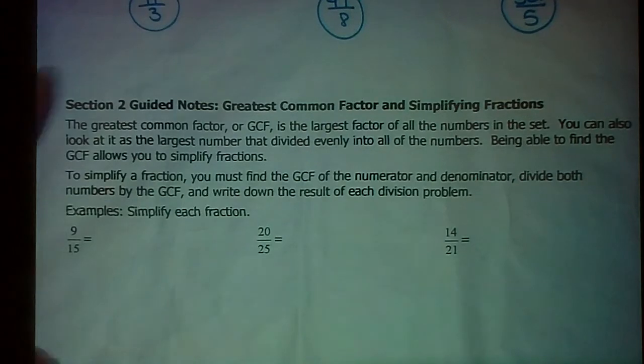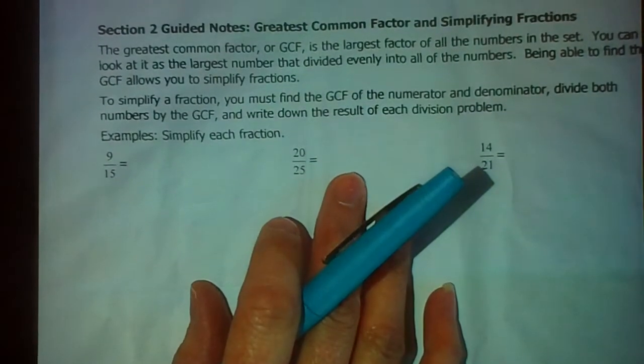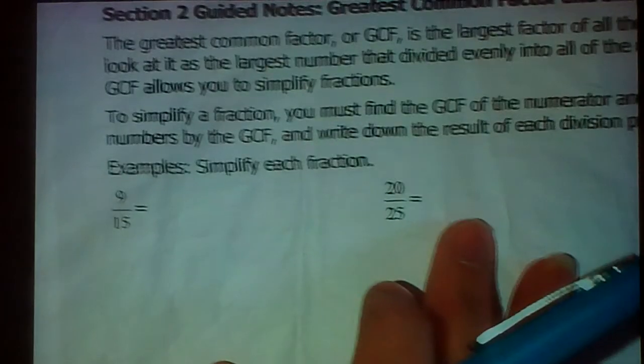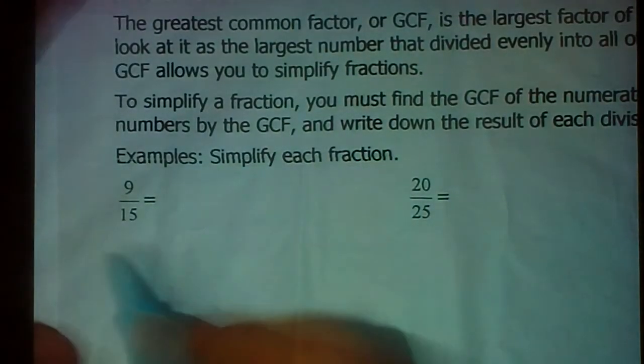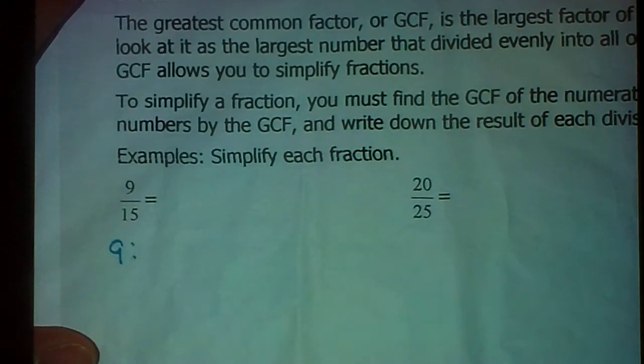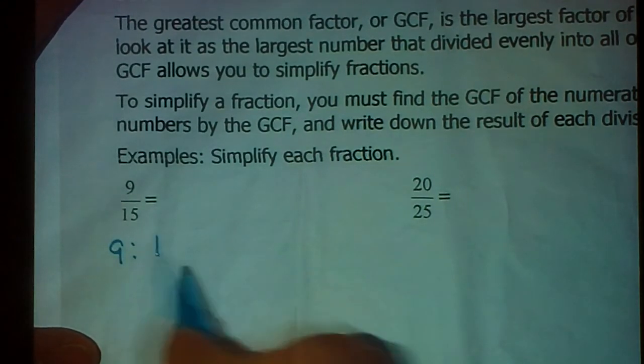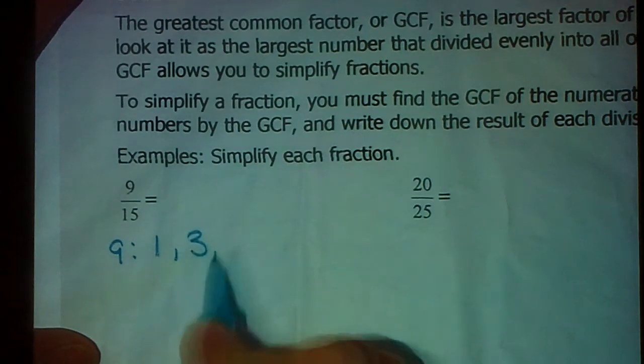Here are some examples. We're going to simplify each fraction. For 9 over 15, you need to think, what are the factors of 9 and 15? I'm going to make a little list here. Factors are numbers that go into 9: 1 goes into 9, and 3, and 9.